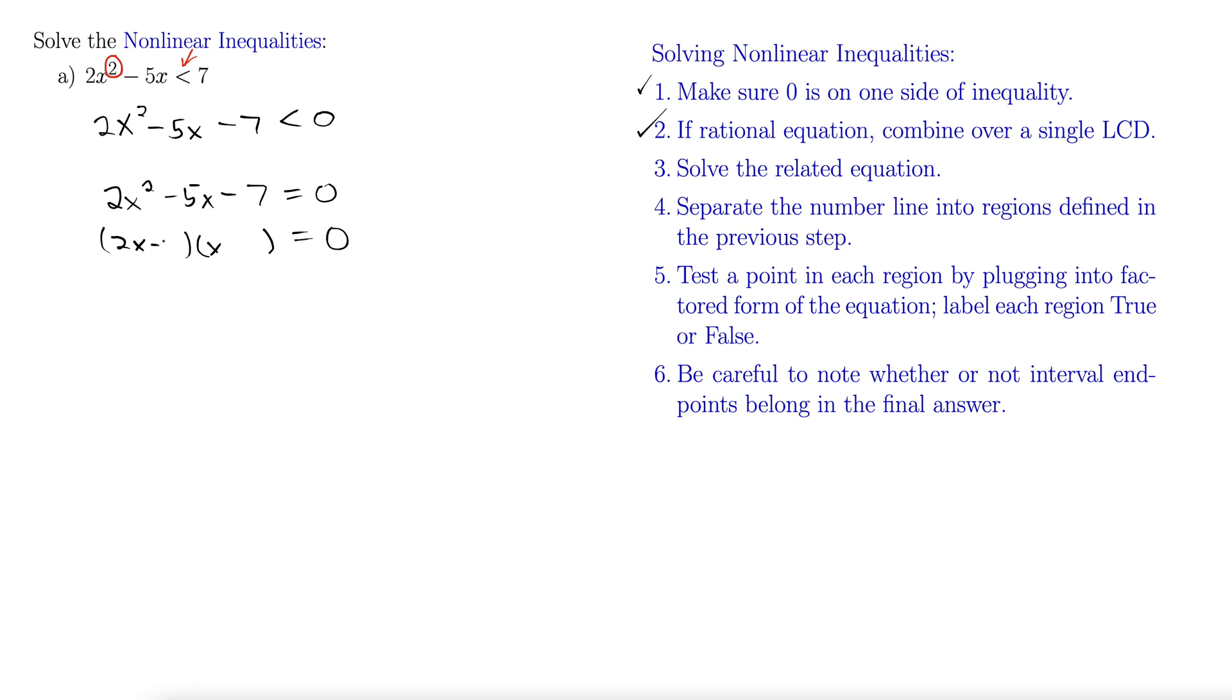But this one we can factor: 2x and x, minus 7 and plus 1. I'm using what's known as the trial and error method there, so I'm mentally foiling that back together to make sure I get negative 5 in the middle. This gives us x equals negative 1 and 7 halves.